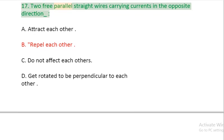Question 17: Two free parallel straight wires carrying currents in the opposite direction: A: attract each other. B: repel each other. C: do not affect each other. D: get rotated to be perpendicular to each other.